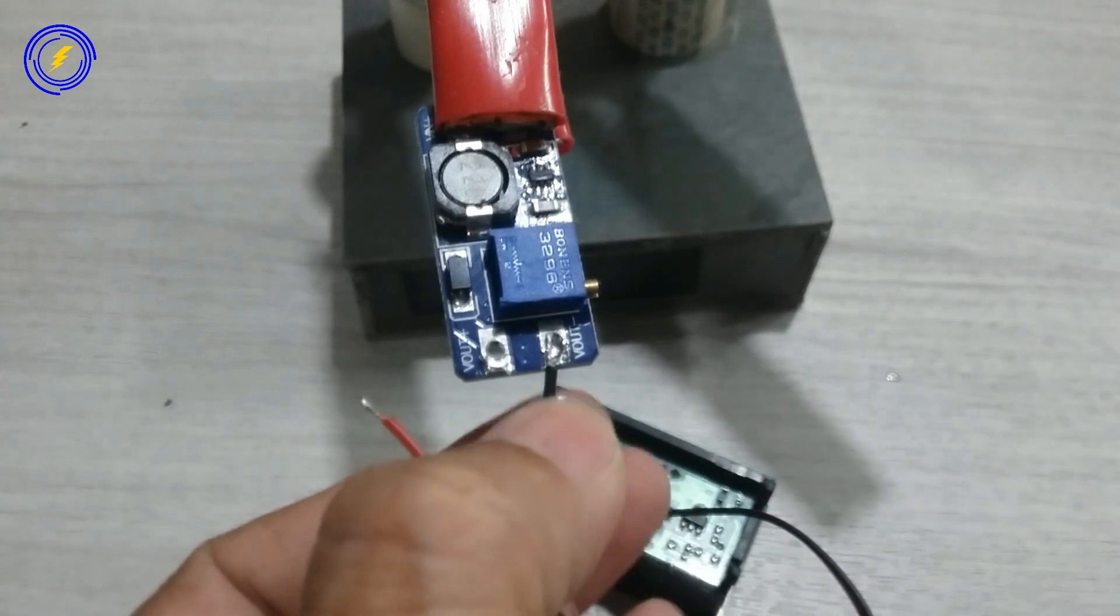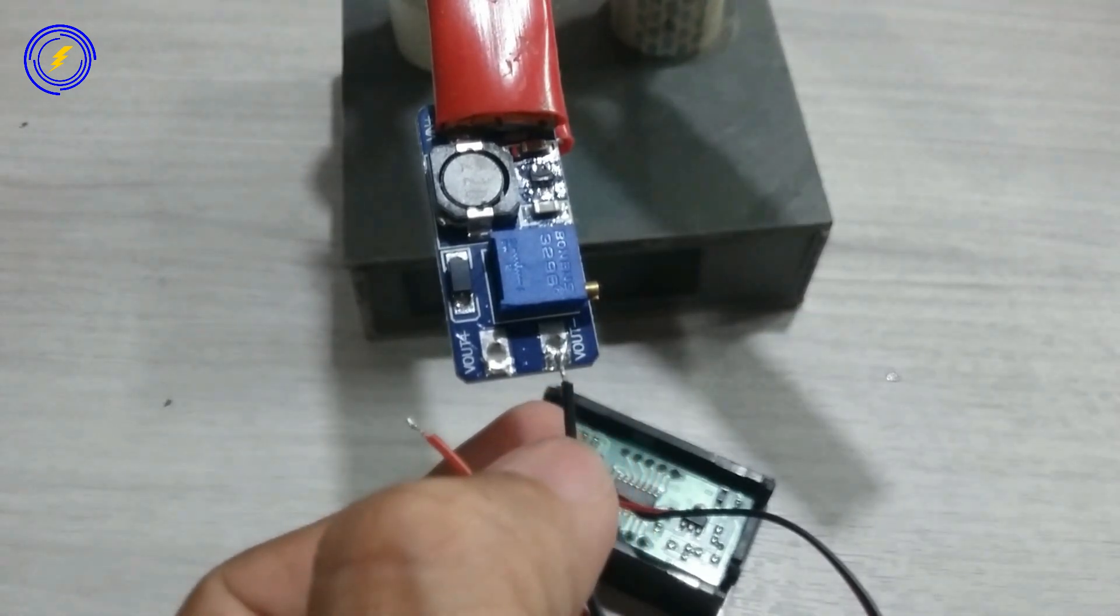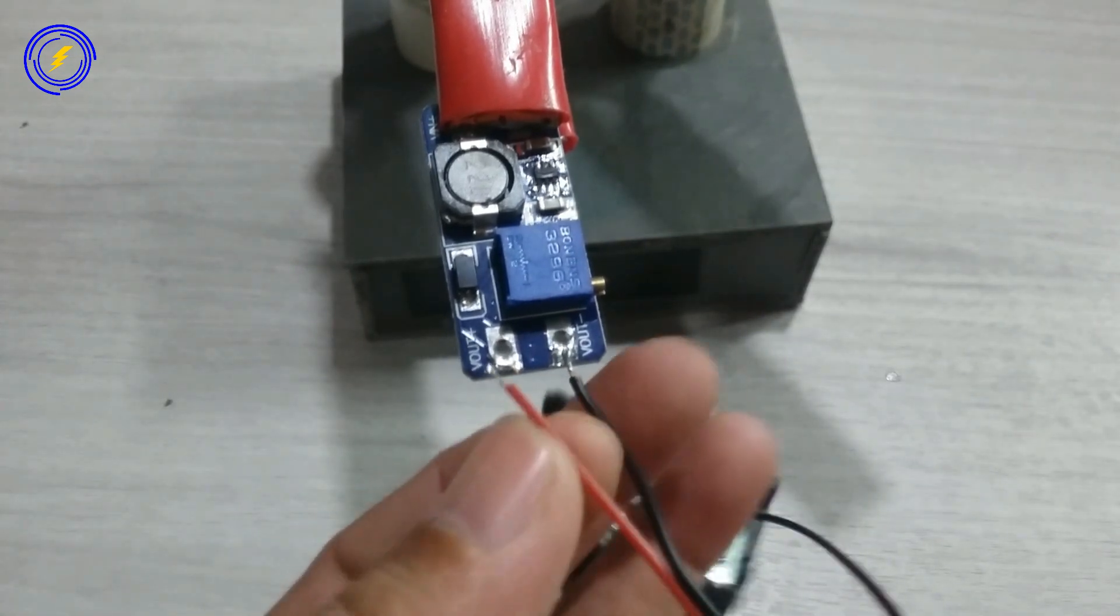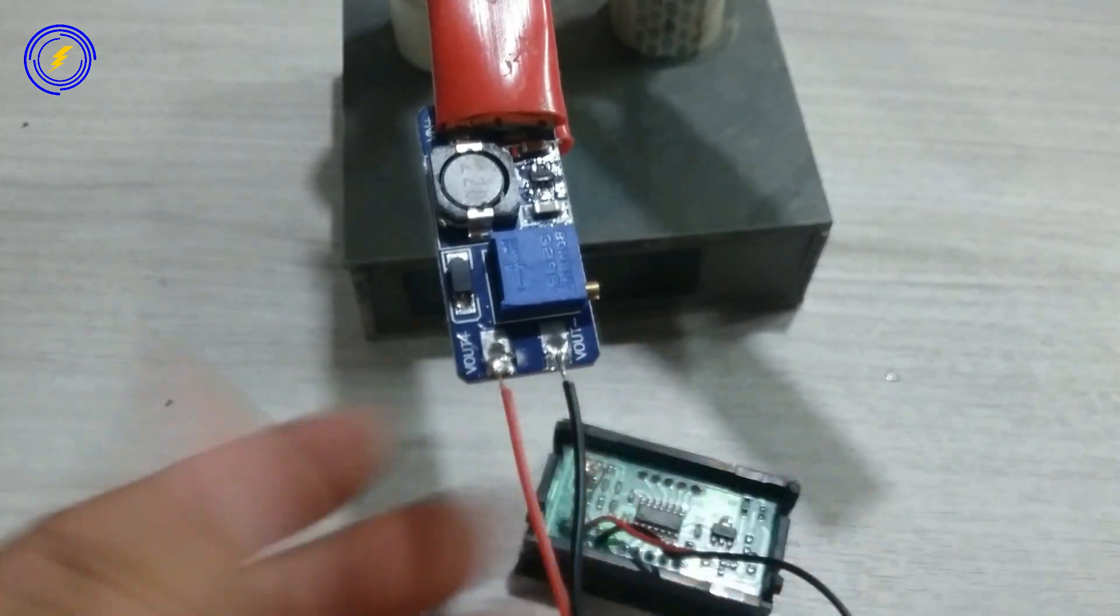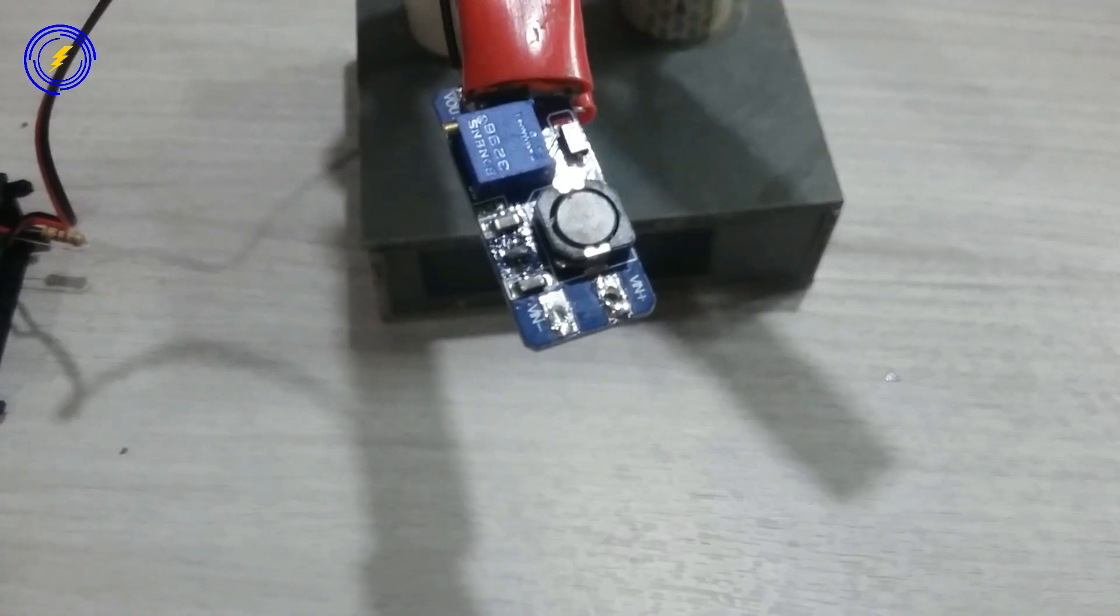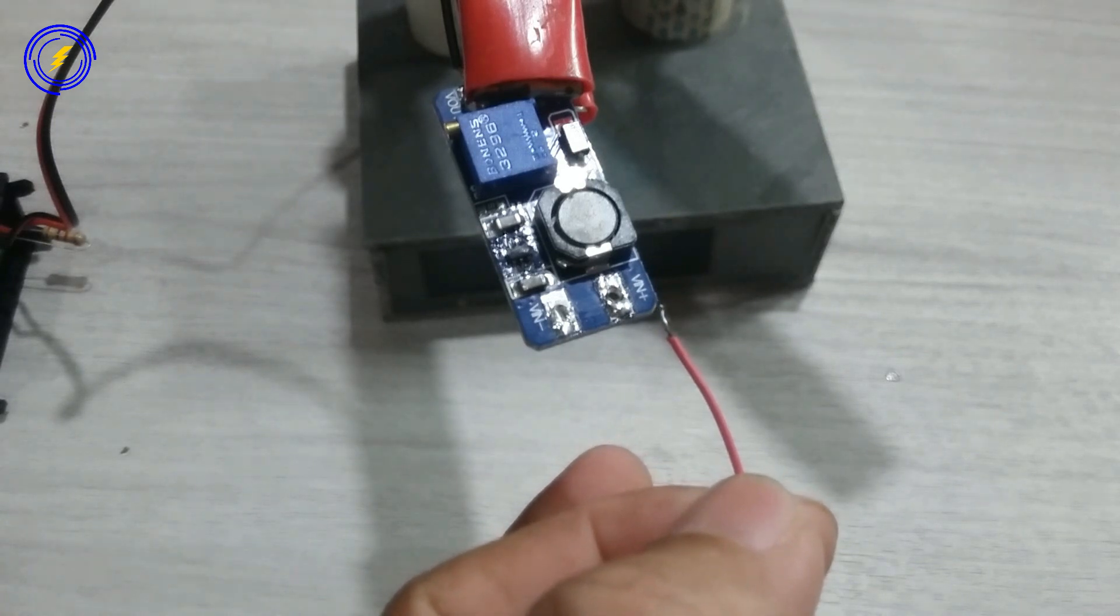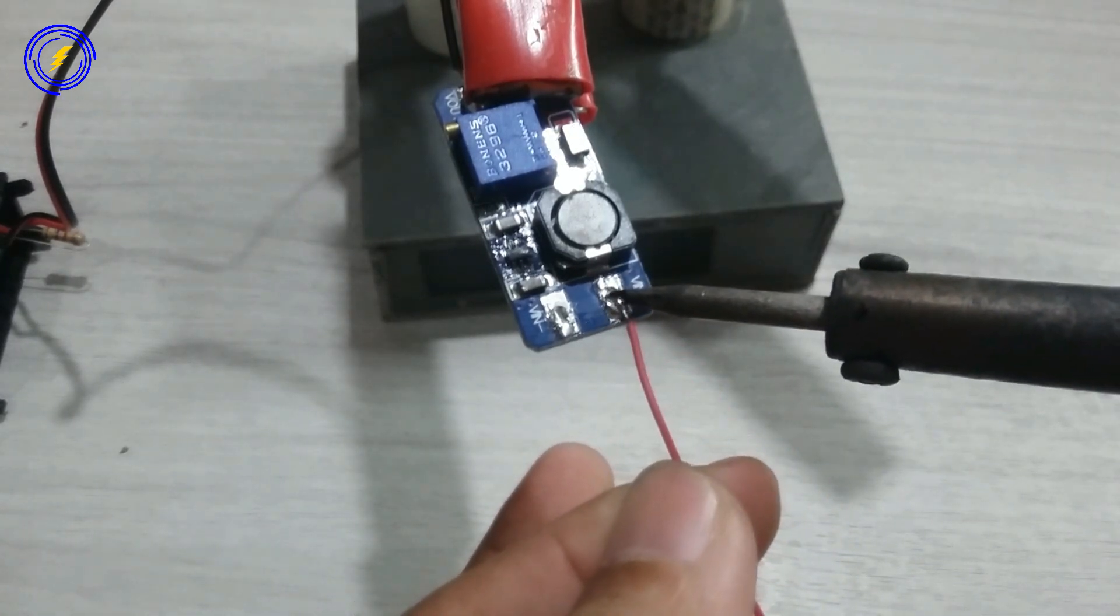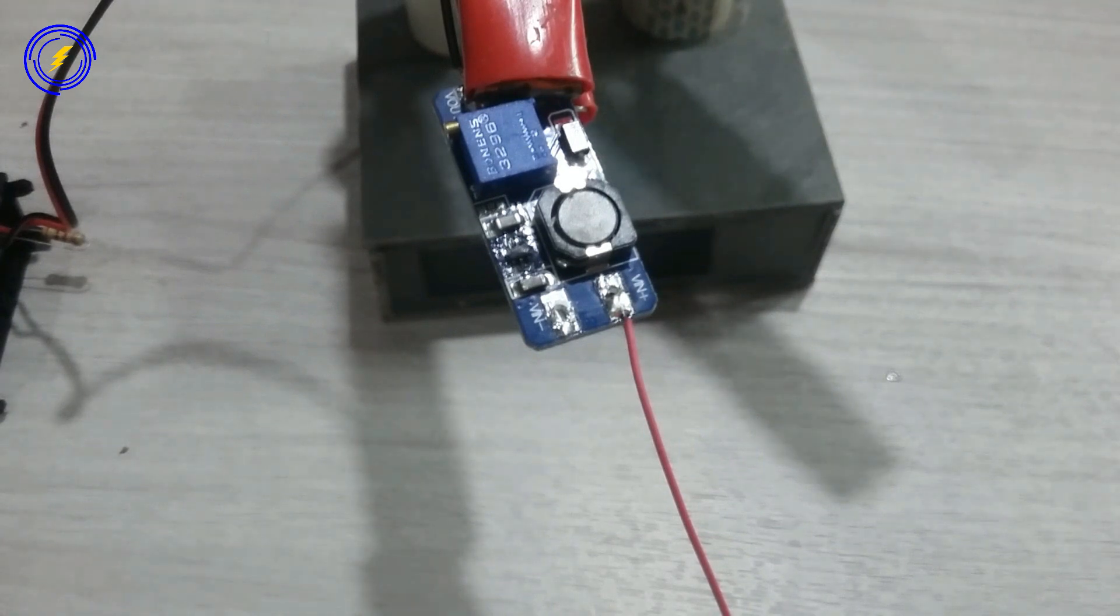Kita sambung dulu untuk output mode step up. Kabel hitam ke load min, untuk kabel merah ke load out plus. For input we connect a green cable for VIN Plus and the green cable for VIN Min.